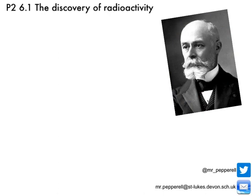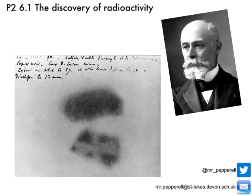Back in 1896, Becquerel was a physicist, and one day he needed some photographic film for one of his experiments. He got his photographic film out and discovered that the film, although he thought it was new, already featured the image of a mysterious key — we can see it there on the film.